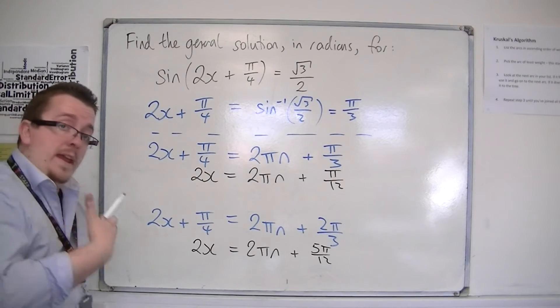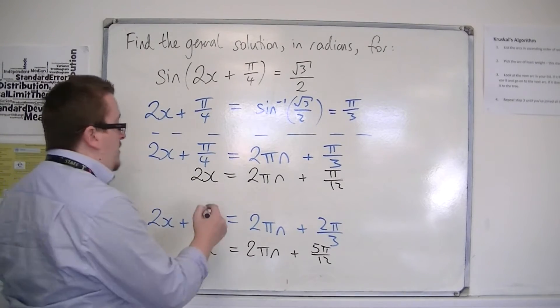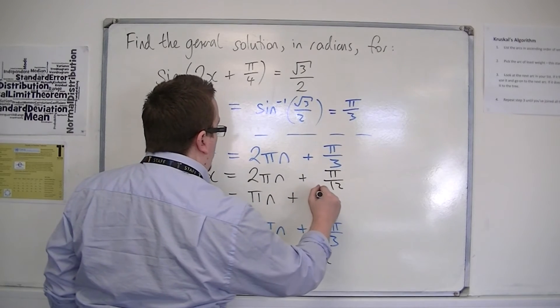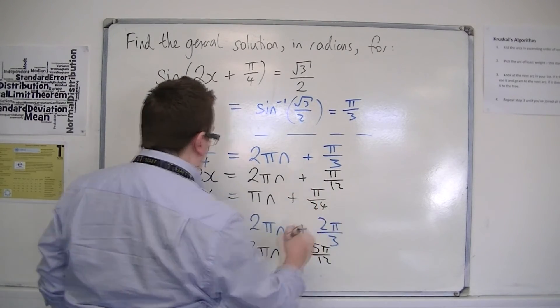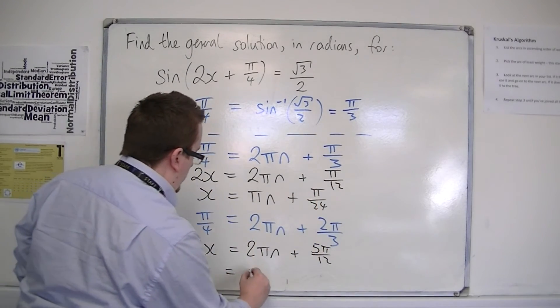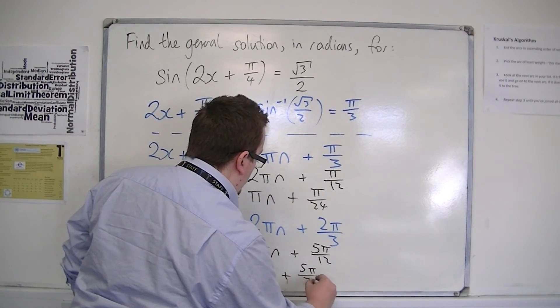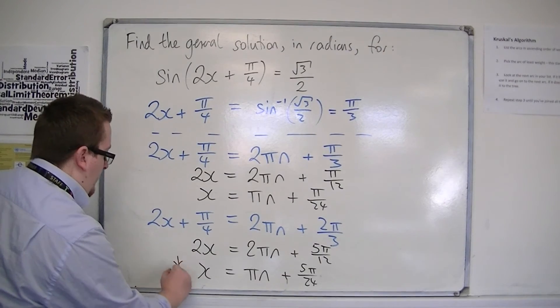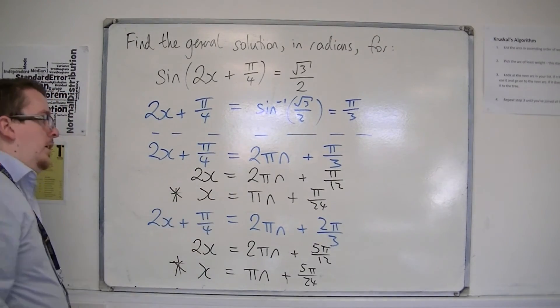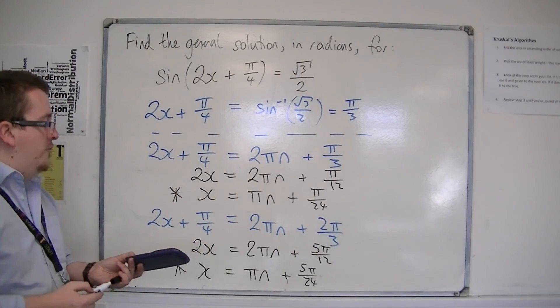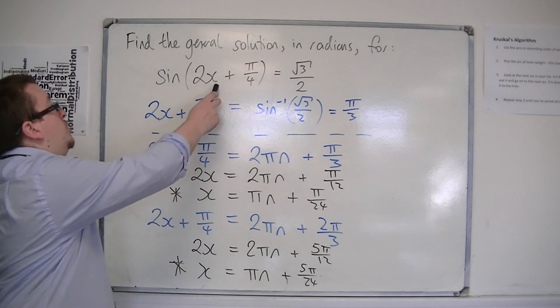Then you can divide both sides by 2. So x = πn + π/24, or x = πn + 5π/24. These two lines will generate all of the solutions. This is the general solution for the original equation.